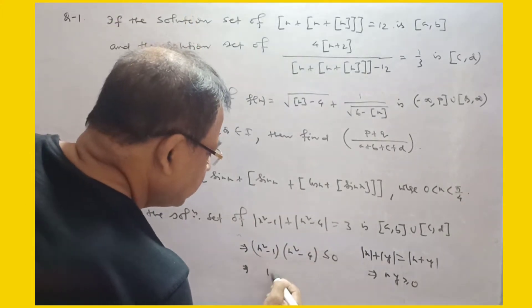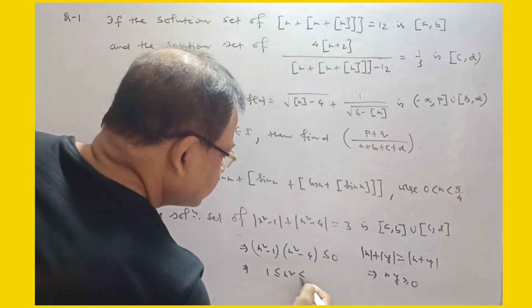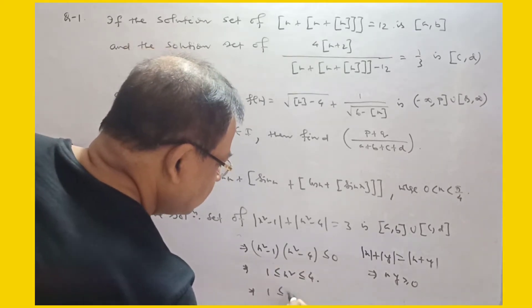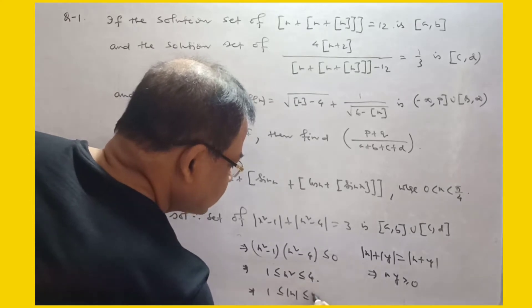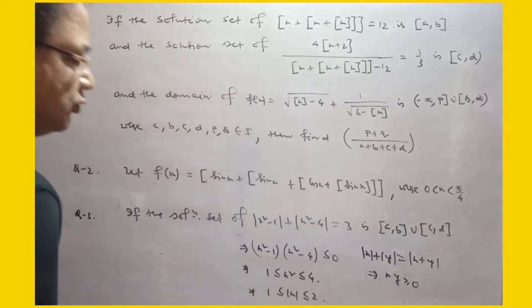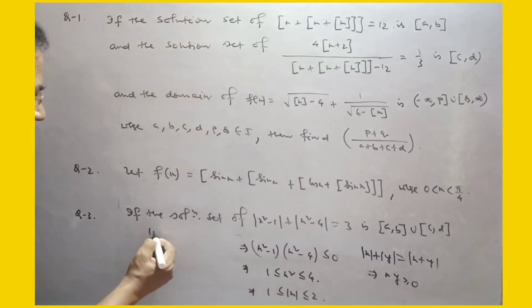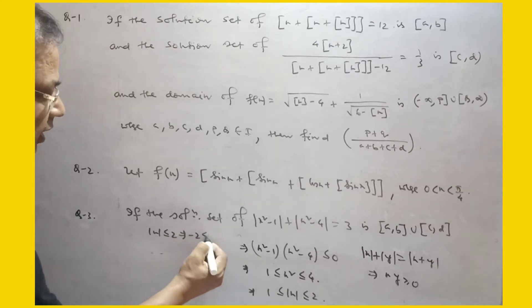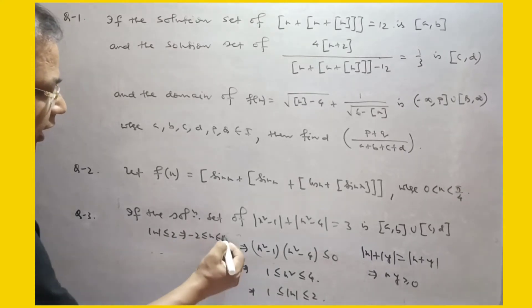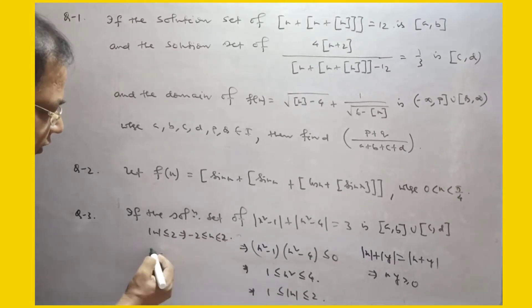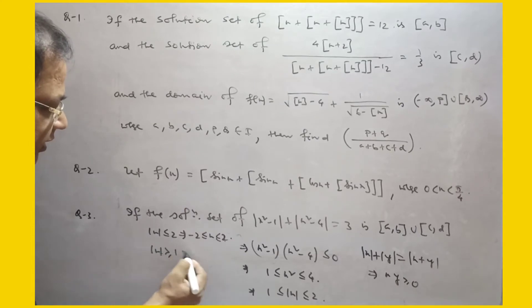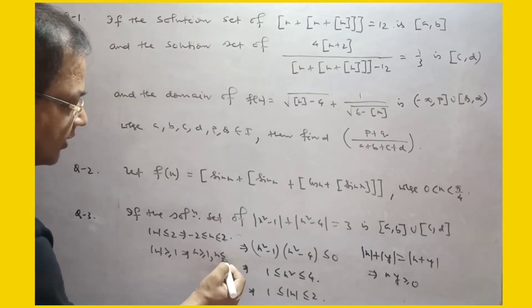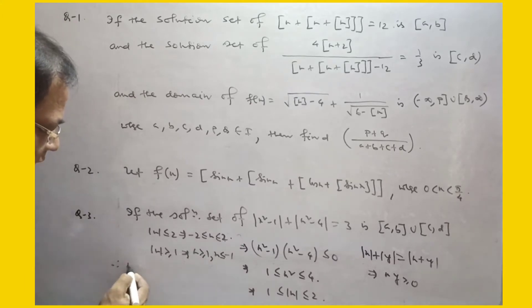So 1 ≤ X² ≤ 4. Taking square roots, we get |X| ≤ 2. And also |X| ≥ 1, meaning X ≥ 1 or X ≤ −1.